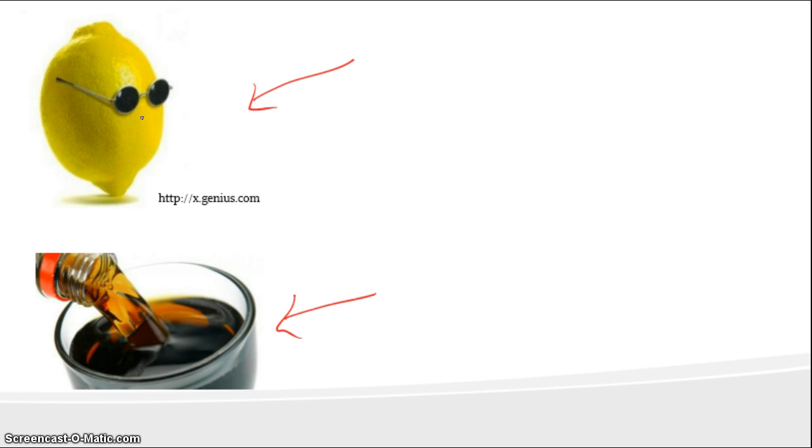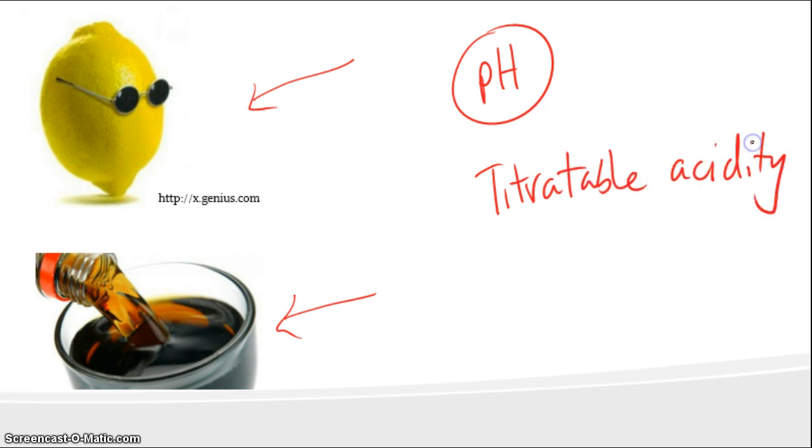There are two ways to measure acidity in wine. One of those ways is pH, and the other way is what we call titratable acidity. You'll see both of those measures when information is published about a particular wine.